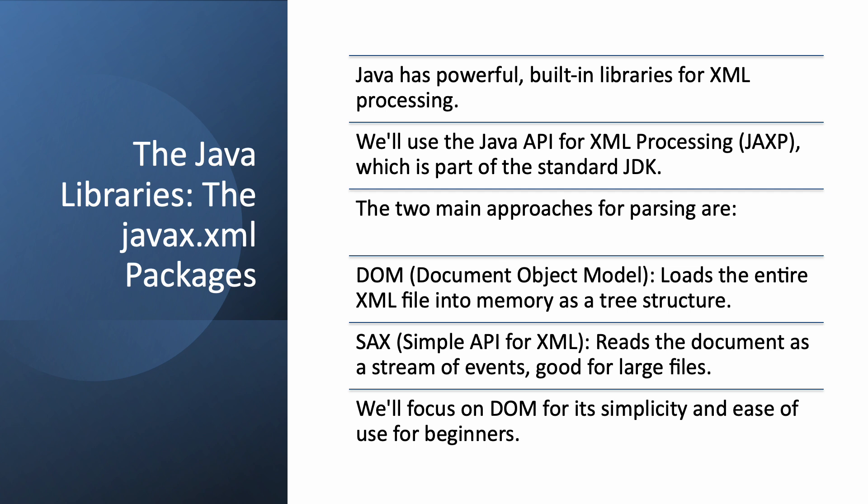Alright, how do we handle these files in Java? The great news is Java comes with excellent built-in libraries for working with XML — you don't need to download anything extra. It's all part of the standard Java Development Kit. The main library we'll use is the Java API for XML Processing, or JAXP. There are two primary ways to parse XML: DOM, which stands for Document Object Model, and SAX, which is the Simple API for XML. DOM is great for beginners because it loads the entire file into memory and represents it as a tree structure, which is very intuitive. SAX is more advanced — it's like reading a book page by page, great for huge files that might not fit in memory. We'll stick with DOM because its tree structure is perfect for learning.